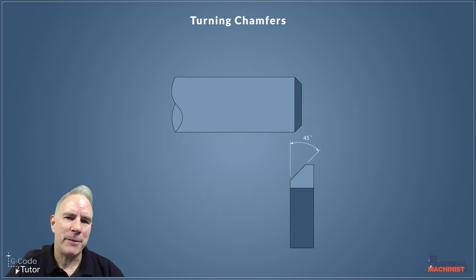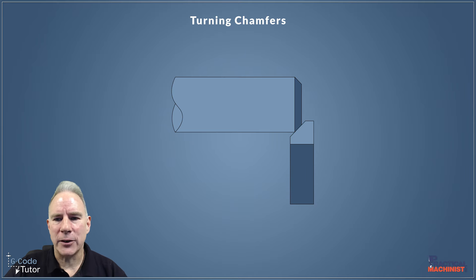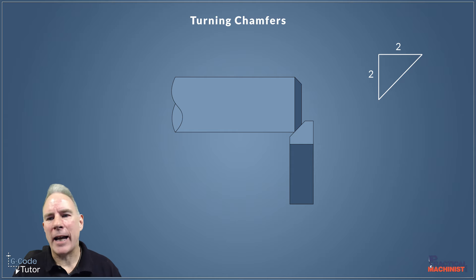Now the great thing about a 45-degree chamfer is the x-axis and the z-axis is the same distance, but we do have to bear in mind that we turn using diameters and not radiuses on a lathe, so you may need to think about that as you're calculating your triangles. But with a 45-degree chamfer we can come in two different ways: we can come in on the x-axis or we can come in on the z-axis, and the distance is the same because both axes on our triangle are the same at a 45-degree angle.